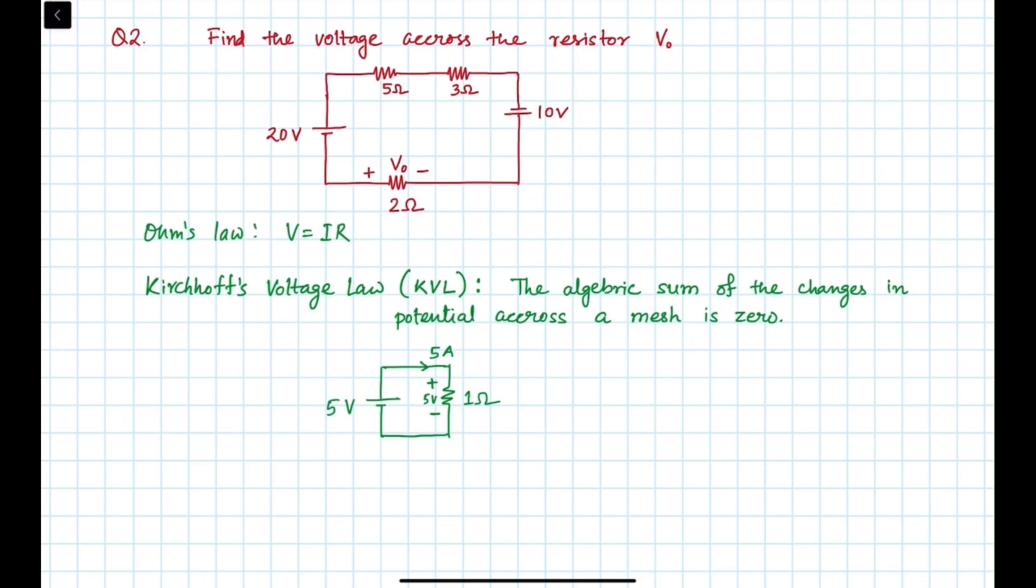Now if we travel through this path - this is a complete loop, right? If we start from this point and travel through the loop, first we are getting this voltage source. If we are entering in the minus side, or the negative side, this is negative and this is positive. So if we are entering the minus side, let's take it minus 5. Then we are traveling through the circuit and here we are entering to the positive side.